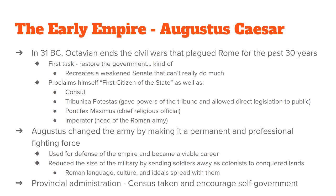Once he declared himself emperor, he redid the military and turned it into a permanent force. Before this, whenever Rome needed an army they put out a call for volunteers, and those volunteers wanted something after winning. Augustus made it a permanent force paid for by the government. He used his army mostly to defend the empire, and rising through the ranks of the army became a viable career choice.